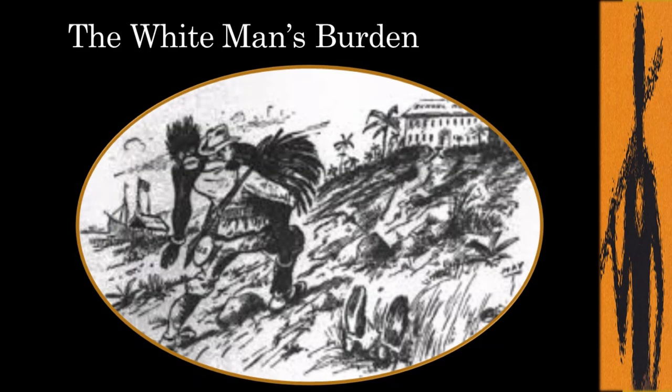The entire colonial process of exploiting Africa and its natives was justified by the Europeans under the pretext of civilizing the savages, satirically known as the white man's burden. This picture in this slide perfectly shows how Western culture, religion, administration, education, and values were forced upon the natives. This became the main subject matter of the novel Things Fall Apart.